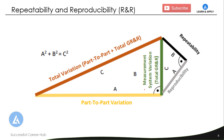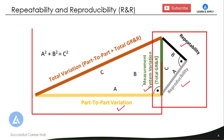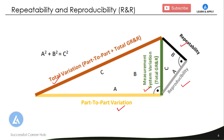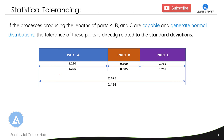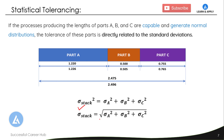If we want to calculate the variance of measurement system variation, we can simply add the variances of repeatability and reproducibility. And if we add the part-to-part variance to that measurement system variation, we get the total variation. Another example is statistical tolerancing. If the processes producing lengths of parts A, B, and C are capable and generate a normal distribution, the tolerances of these parts are directly related to their standard deviations. Based on the additive property of variances, the total variance of the stack equals the sum of variances of individual parts, and the standard deviation is simply the square root of their sum. This is again an important application of variances.